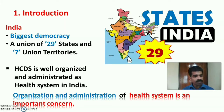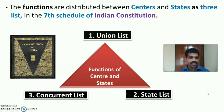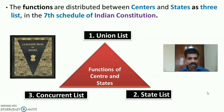India is the biggest democracy in the world. It is a union of 29 states and seven union territories. The health care delivery system in India is well organized and administered. Organization and administration of the health system is an important concern.